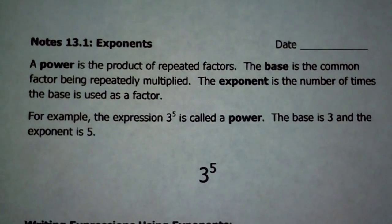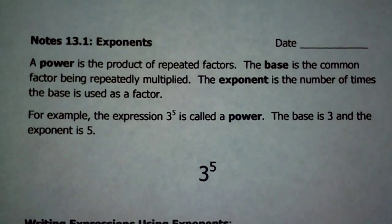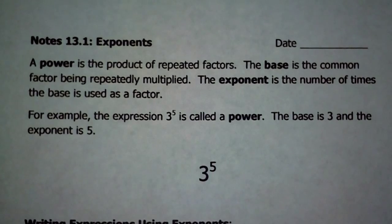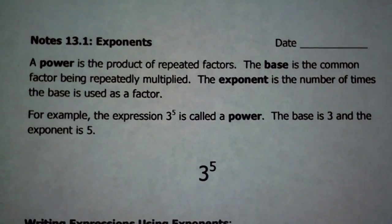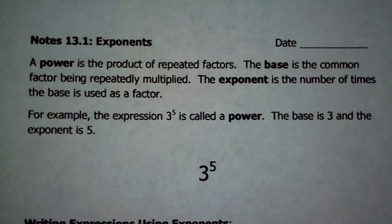First thing we're going to do is start with the basics, a few different vocabulary words, so that you know what the directions are asking you for when presented with directions. A power is the product of repeated factors. The base is the common factor being repeatedly multiplied. The exponent is the number of times the base is used as a factor.